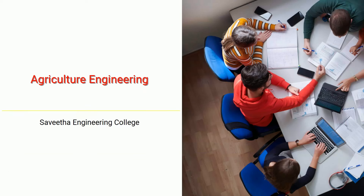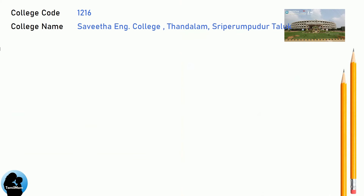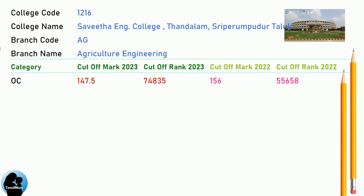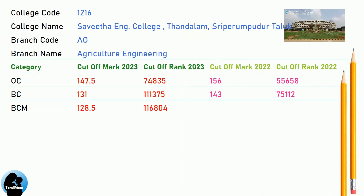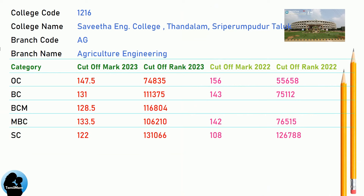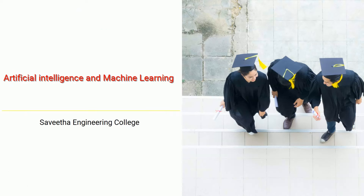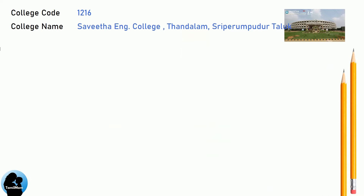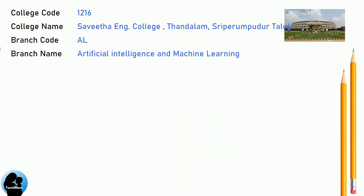Savitha Engineering College cut-offs for Agriculture Engineering. Cut-offs for Artificial Intelligence and Machine Learning.